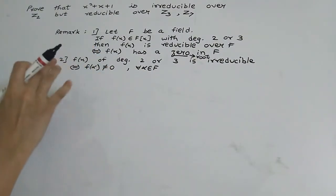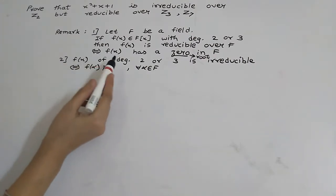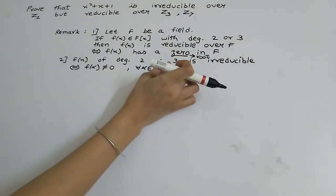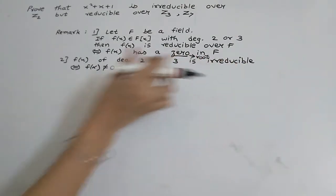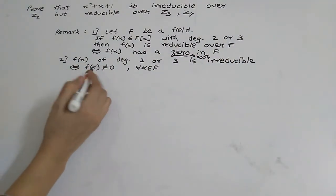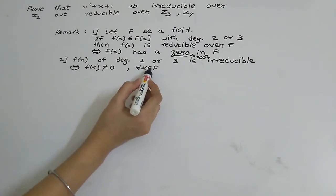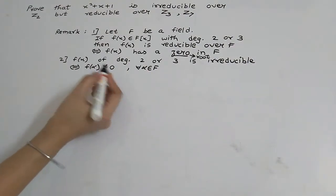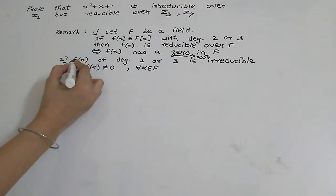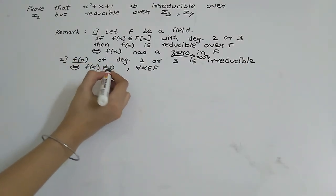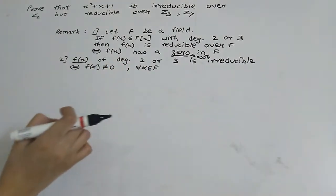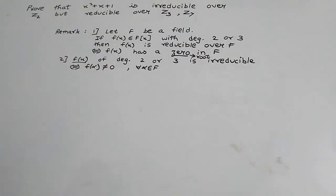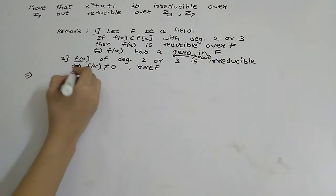The second remark is: f(x) of degree 2 or 3 is irreducible if and only if f(α) is not equal to 0 for all α belonging to F. That means if we substitute every element of F into f(x) and all values are non-zero, then f(x) is irreducible.